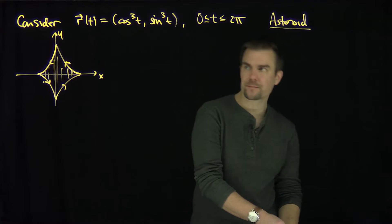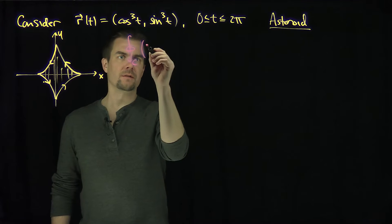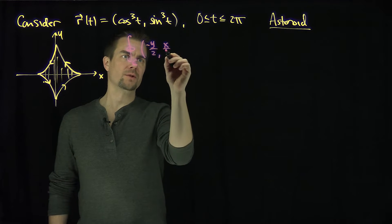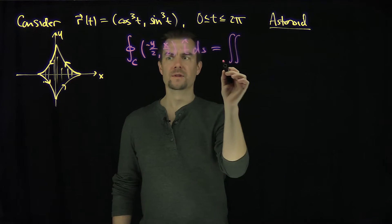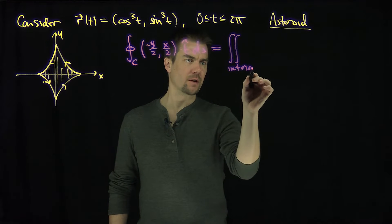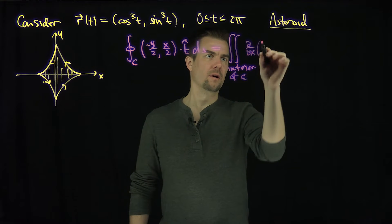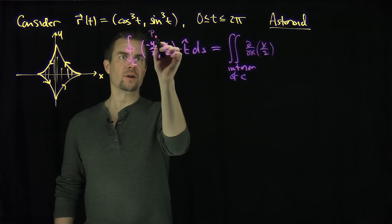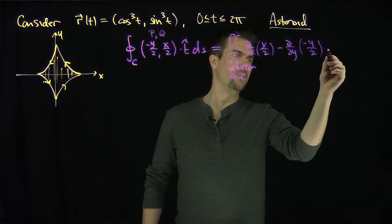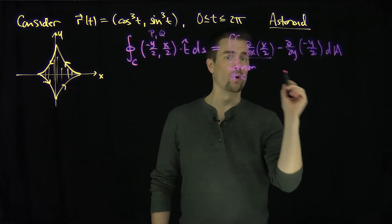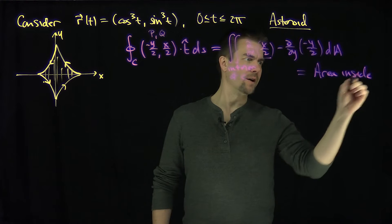We're going to use Green's theorem to do so. Recall that if I have a closed curve C and I compute the line integral of the vector field negative y over 2, x over 2 dotted with the tangent, by Green's theorem this equals the double integral over the interior of the region of the x-derivative of x over 2, minus the y-derivative of negative y over 2, dA. This turns into one-half plus one-half, which is just the area inside the curve C.